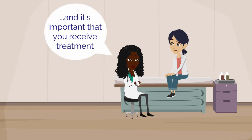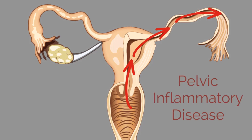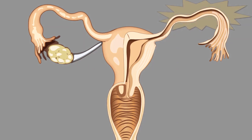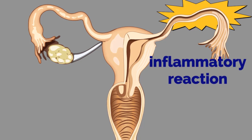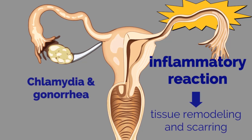An untreated infection can ascend through the cervix, allowing bacteria to enter the uterus and then the fallopian tubes. This results in pelvic inflammatory disease. Bacteria cause destruction of the epithelial cells and cilia, causing a localized inflammatory reaction. Chronic inflammation then results in tissue remodeling and scarring. Chlamydia and gonorrhea are the most commonly isolated pathogens in PID, although it can be caused by many other infections. It is important to note that cervical swabs may be negative since the bacteria ascends in PID.